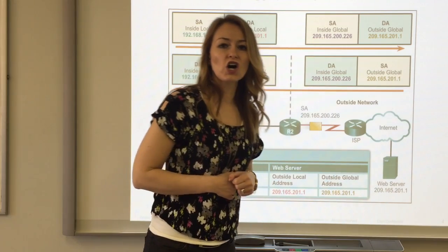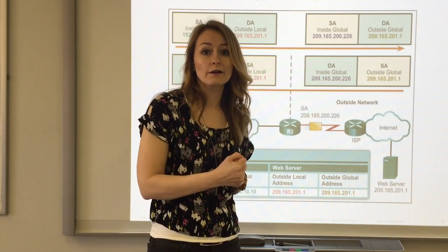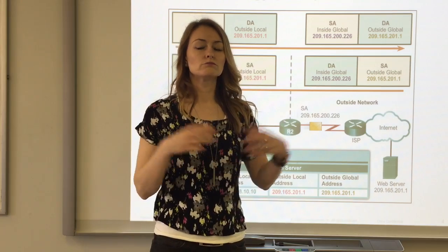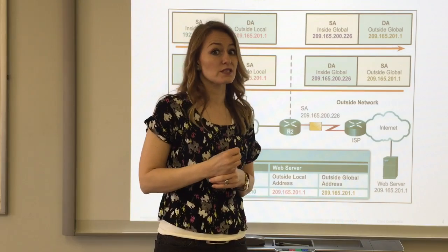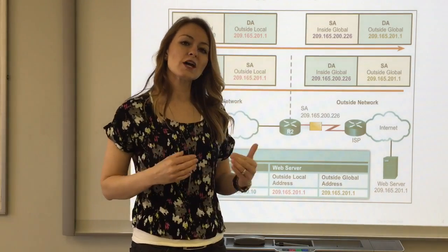Aunt Claire doesn't call little slugger little slugger. She calls him Jonathan, his real name. When she addresses a letter to him, she doesn't put little slugger on it, she puts Jonathan.